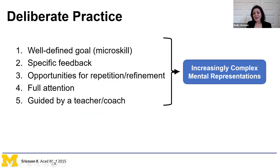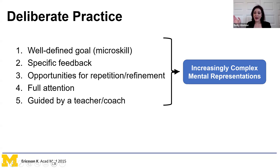Erickson created a framework for staying engaged in this process—how one becomes an expert—and termed it deliberate practice. He had five strict requirements: a well-defined goal or micro skill; specific feedback on that micro skill; multiple continuous opportunities for repetition and refinement; the ability to give skill development full attention; and guidance by a teacher and coach.